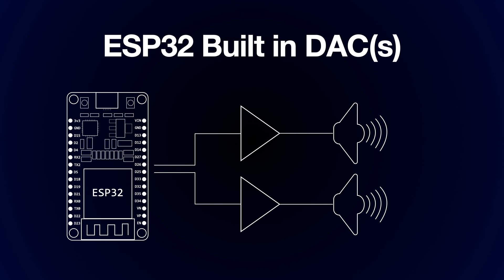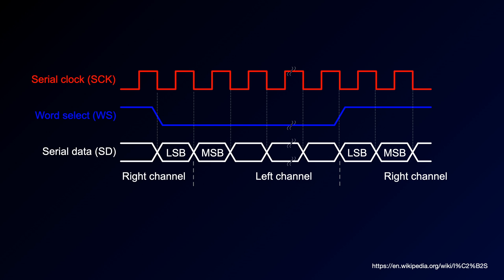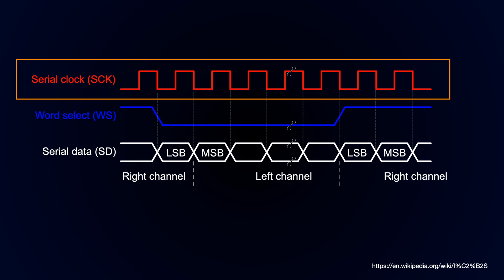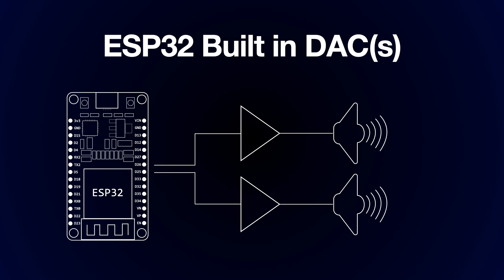Hey everyone, we're back with another video about the ESP32 and audio output. In previous videos we've covered using the ESP32's I2S peripherals along with the built-in analog-to-digital converters for reading audio data. We've also looked at using the I2S peripherals for directly outputting digital audio signals. In this video we're going to take a look at using the built-in digital-to-analog converters, and we'll use these to output analog signals directly from the ESP32.